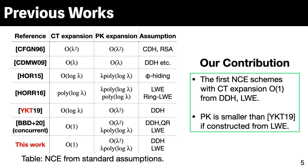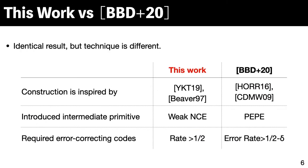I'd like to mention that in a concurrent work by Brakerski et al., presented at the latest TCC, they show similar results. However, the technique is different from ours. Our result is obtained by improving our previous work, whose idea of constructing NCE has some similarity with the NCE scheme by Beaver, while they improved the NCE scheme by Hemenway et al., which is similar to the NCE scheme by Choi et al. As I said, we defined a weak version of NCE, while they introduced an error-correcting code with rate greater than 0.5 to construct wiretap codes, which amplifies our weak NCE, while they use an error-correcting code that is able to correct almost 0.5 fraction of errors.